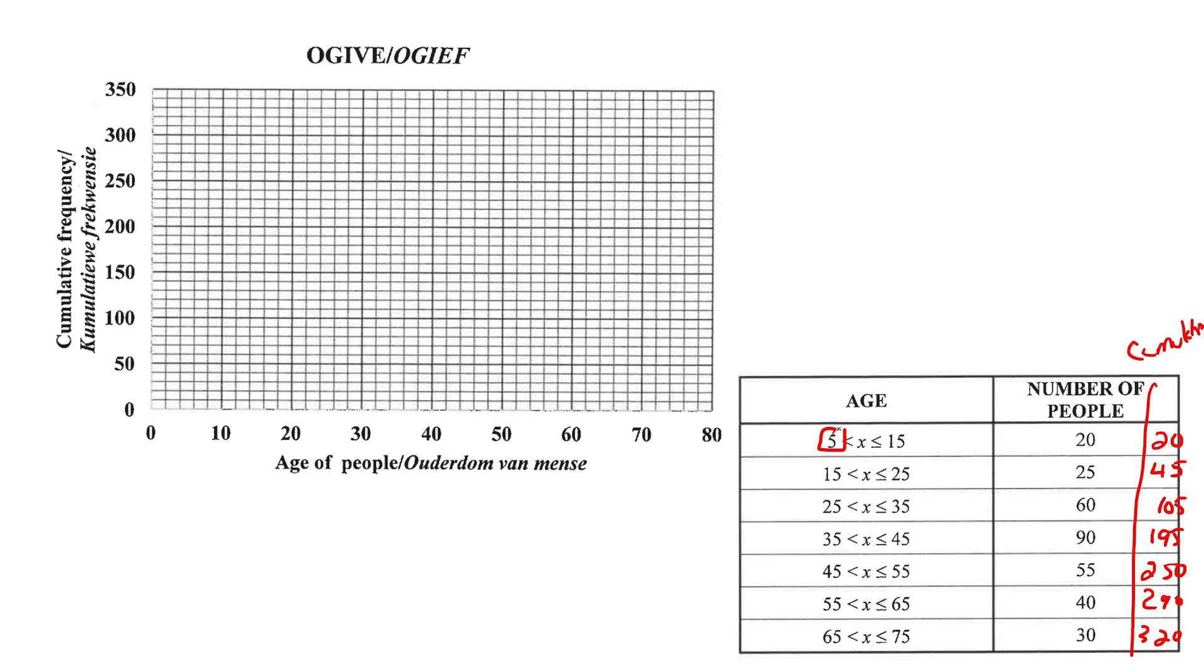Now the way a cumulative frequency is, this number here is your starting, your grounding number. So the number 5 would be there, so put a dot there. That's your starting point. But now you're not going to use these numbers anymore. Now you're going to use only these numbers. That is how a cumulative frequency graph works. So you use this number as your little dot and then you use these numbers together with these numbers.